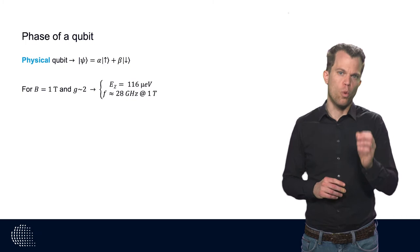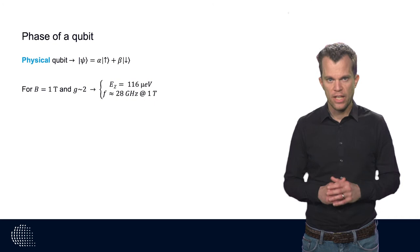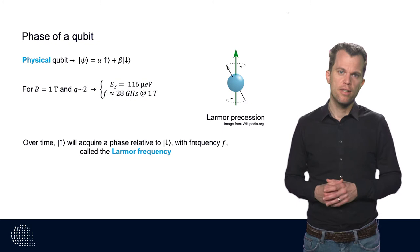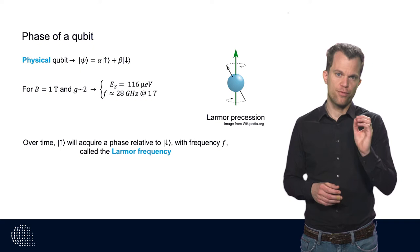For a g-factor of 2, a magnetic field of 1 tesla results in an energy of 116 microelectron volts. In frequency, this corresponds to 28 GHz. Now, what does this frequency mean? Over time, the spin-up state will acquire a phase relative to the spin-down state, exactly with this frequency, which is called the Larmor frequency.